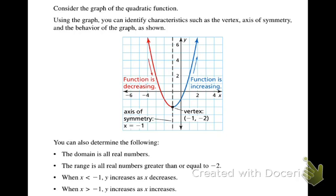So the first example out of your book is just that. We're going to consider the graph. We're going to use the graph to identify some characteristics, such as the vertex, axis of symmetry, and the behavior. So this is the one in your book as example 1. We can describe the domain and the range. But you can see on the picture of the graph, it shows the vertex as negative 1, negative 2.